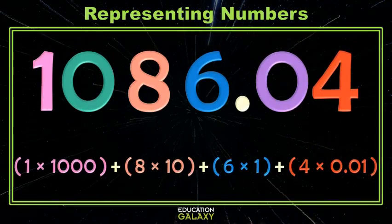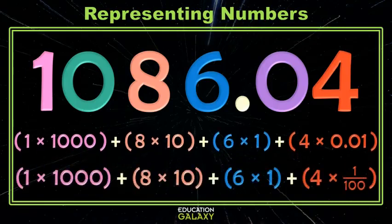Sometimes instead of seeing the decimal, you'll see the fraction. So that 4 times 100 might be written this way.